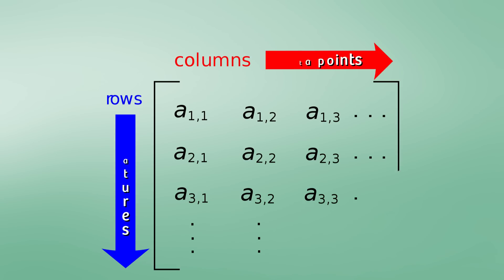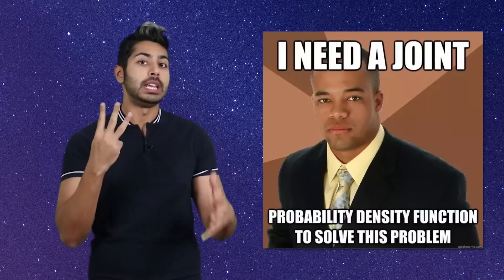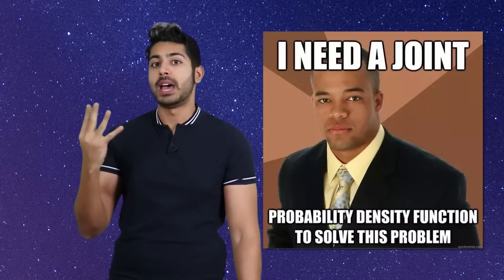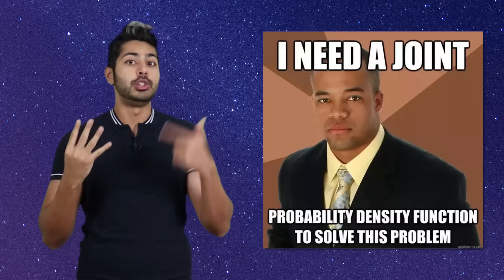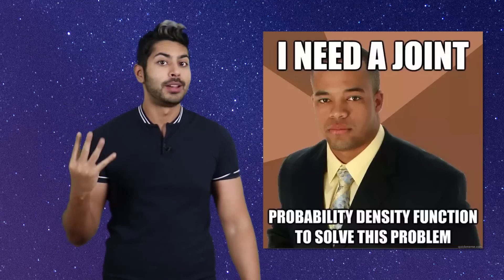It gives us a set of operations that we can perform on groups of numbers known as matrices. Our training set now becomes an M by I matrix of M samples that have I features. Instead of a single variable with a weight, each of the features has a weight. So that's an example of how three of the four main branches of math dealing with machine learning are used. But what about the fourth? Probability.